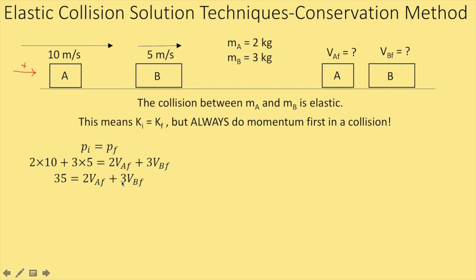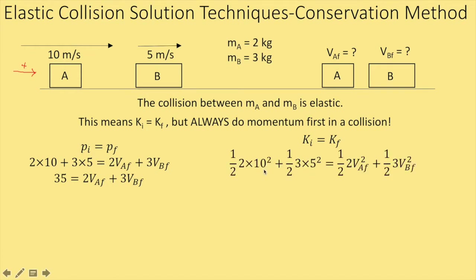We have two unknowns and I can simplify a little bit, but I'm kind of stuck. Now I go back and recall I was told it was elastic, and that means I can also write an equation saying the initial kinetic energy equals the final — the kinetic energy just before the collision equals it just after. So we have (1/2)mv² for block A initially, block B initially, and then afterwards they each have their own kinetic energy. We end up with the same two unknowns.